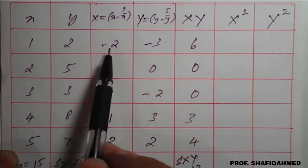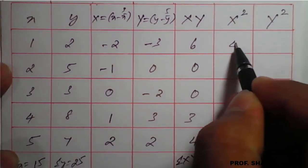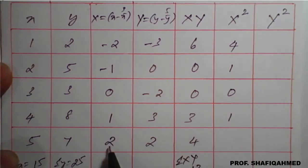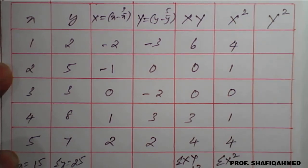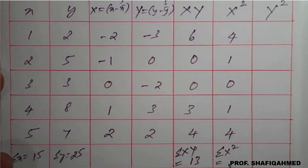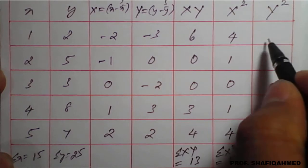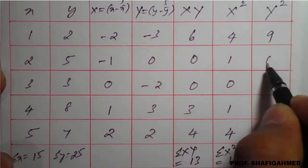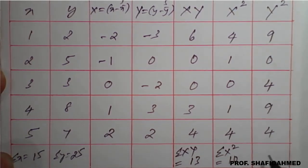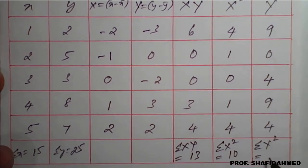Now for X² column: (−2)² = 4; (−1)² = 1; 0² = 0; 1² = 1; 2² = 4. So summation of capital X² = 10. For Y² column: (−3)² = 9; 0² = 0; (−2)² = 4; 3² = 9; 2² = 4. So summation of capital Y² = 26.